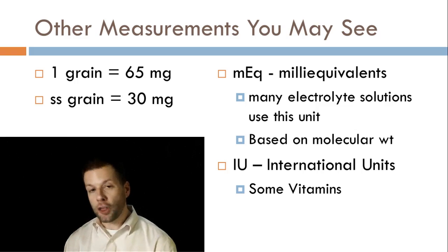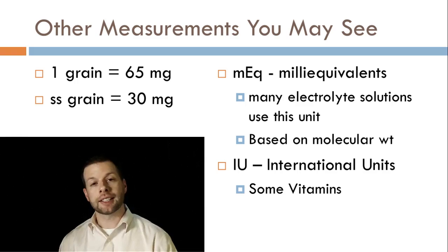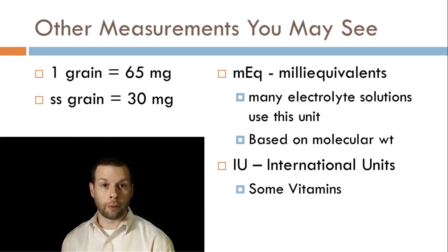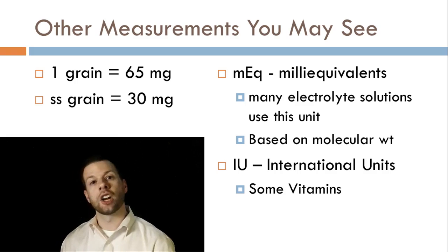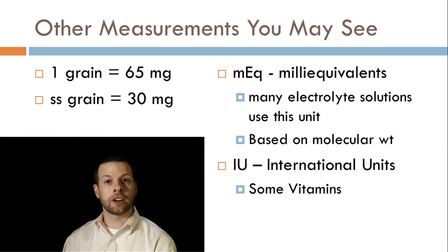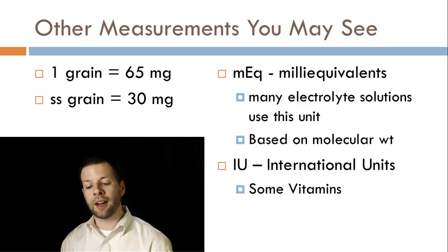Last slide on this lecture. And that's other measurements you just might run into. I want you to be familiar with these. They're not as common that you're going to deal with them, but nonetheless, you want to be familiar with them at the least. And that is the grain. It was an old method of weighing things back, not in the modern era, but in a previous era. Grains were how many things were measured. One grain equals 65 milligrams.